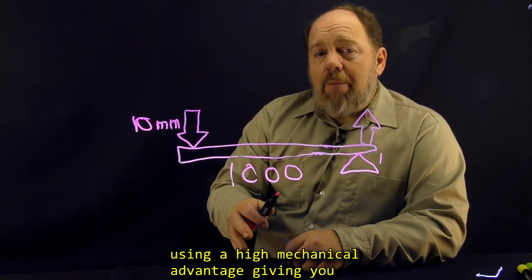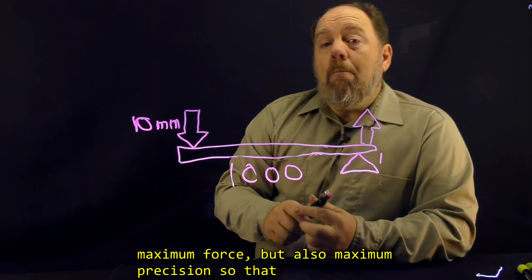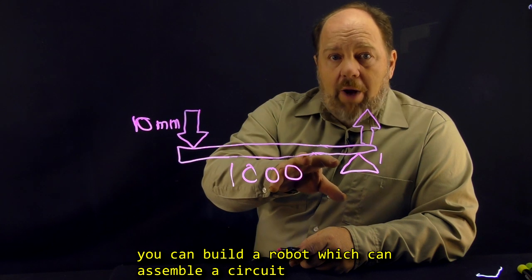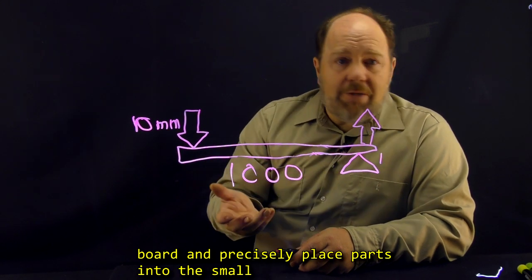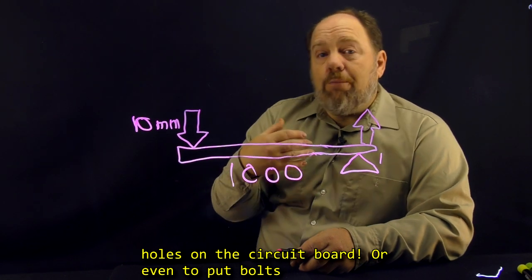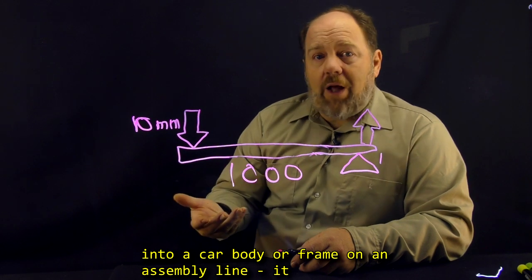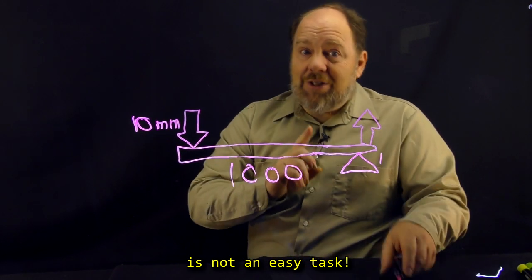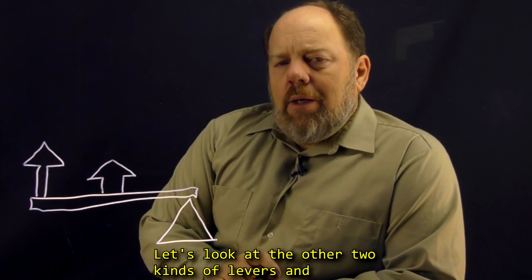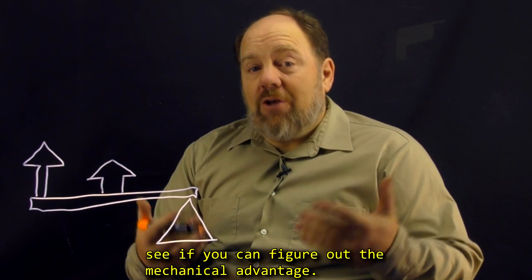Not only is a high mechanical advantage giving you maximum force, but also maximum precision so that you can build a robot which can assemble a circuit board and precisely place parts into the small holes on the circuit board, or even to put bolts into a car body or frame on an assembly line. It is not an easy task. Let's look at the other two kinds of levers and see if you can figure out the mechanical advantage.